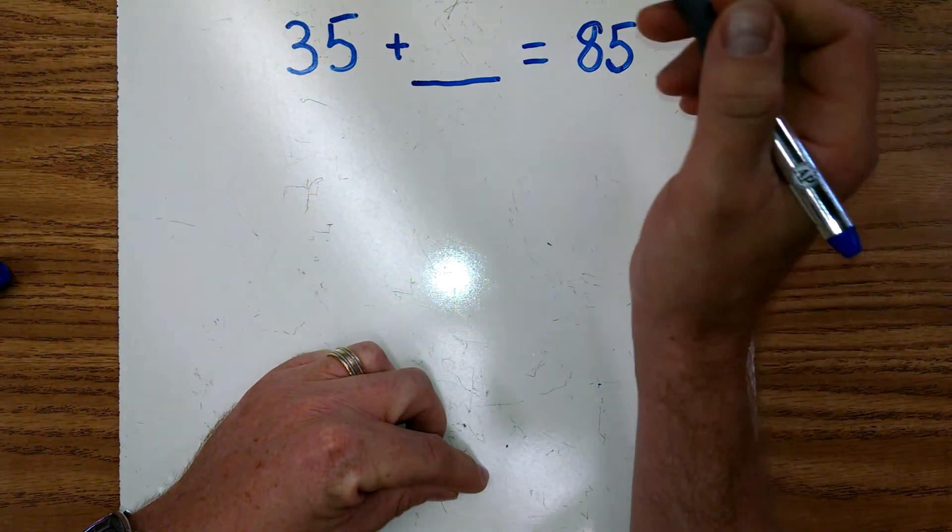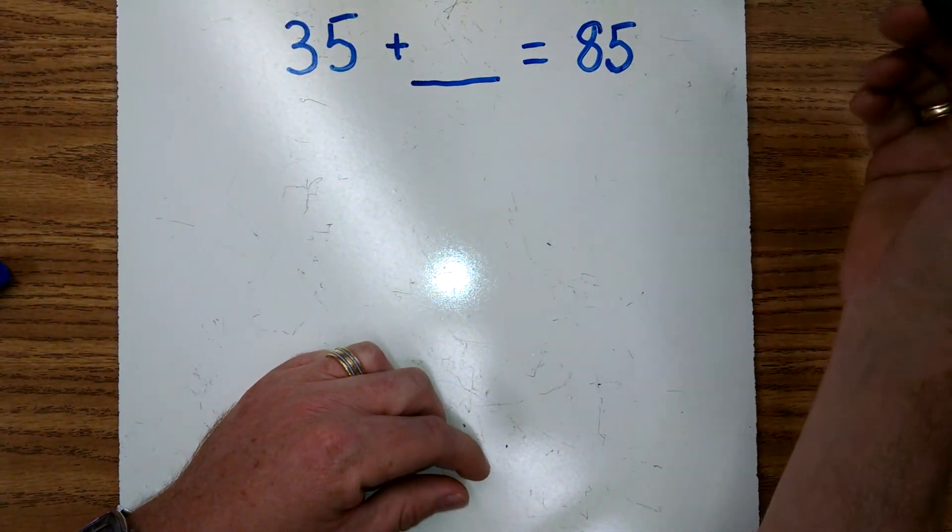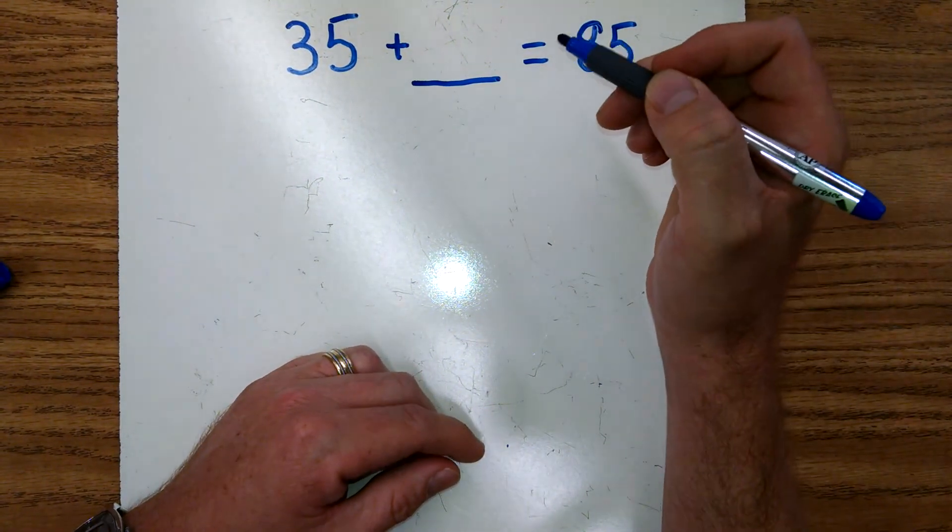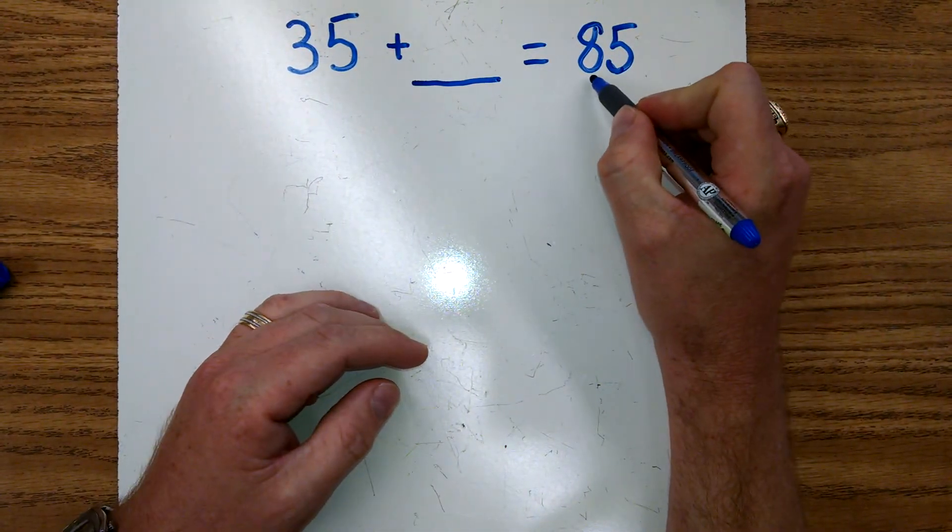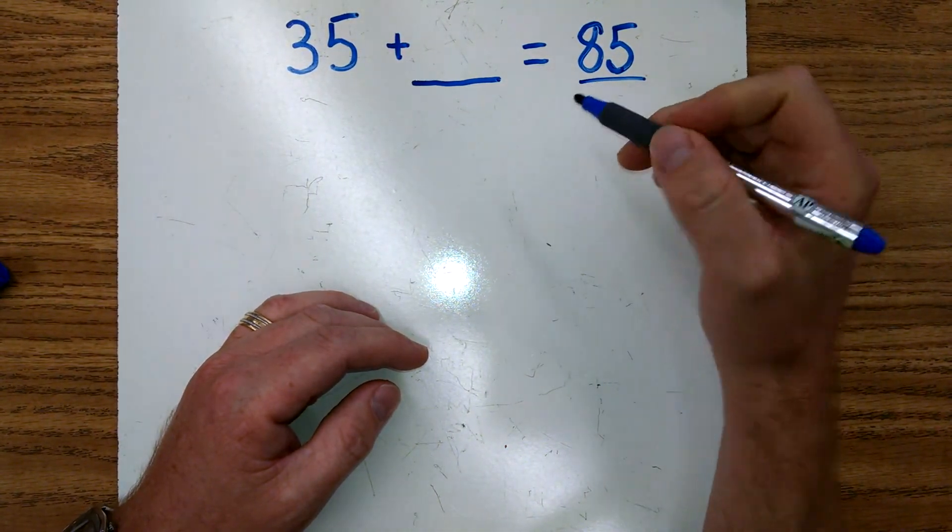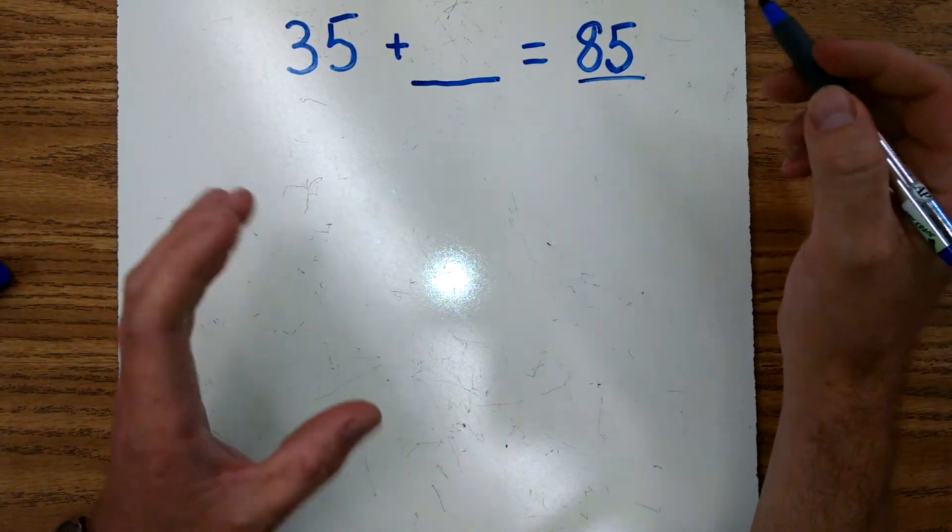An easy way to solve this, we're going to call this the arrow method. It's just counting up by tens, and if there are any more left, we want to try and get as close to this number as you can without going over.